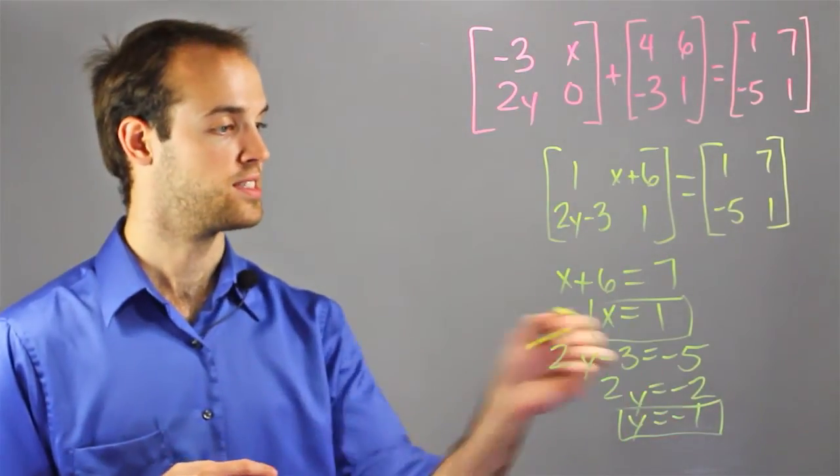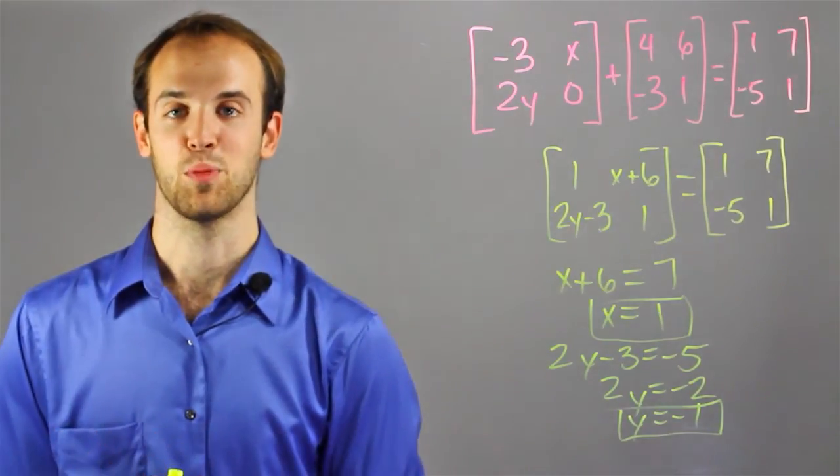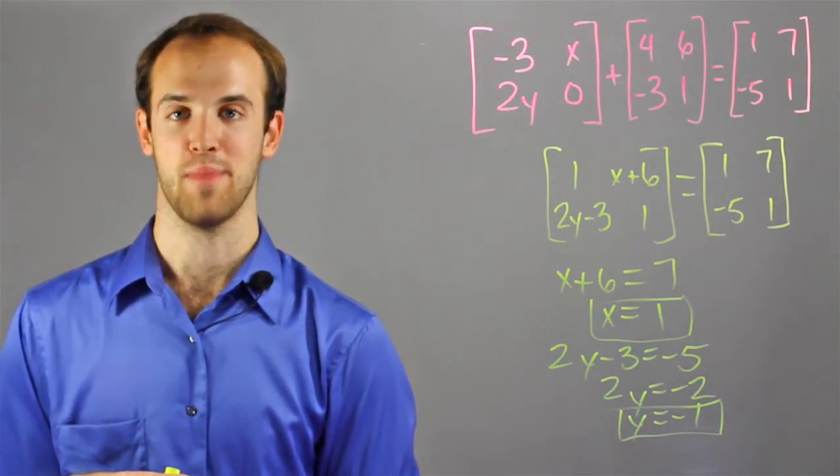So, I know that x is equal to 1, and y is equal to negative 1. I'm Drew Moyer, and that is how to simplify matrix operations.